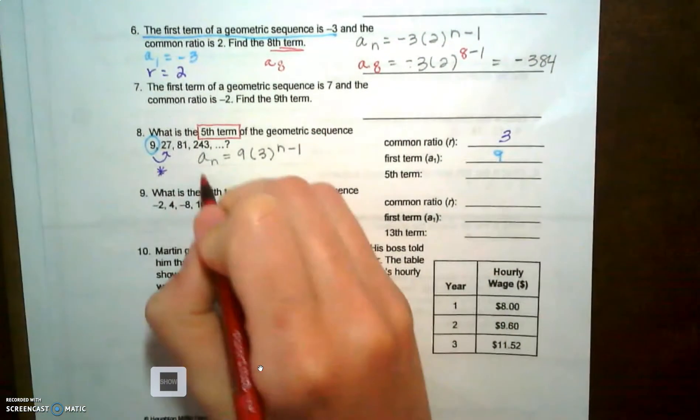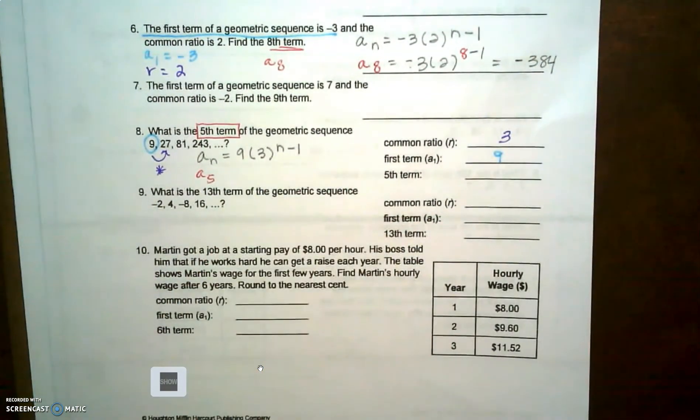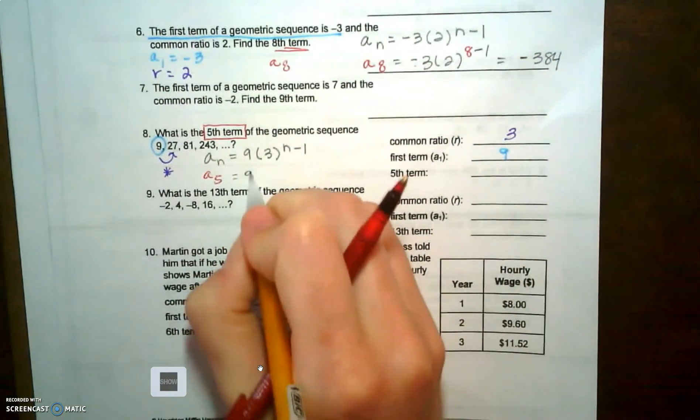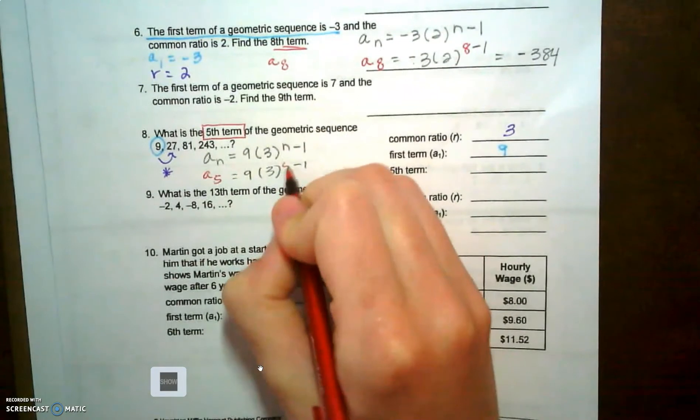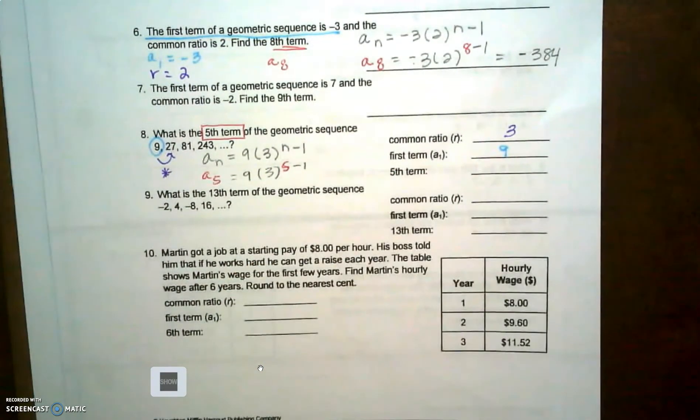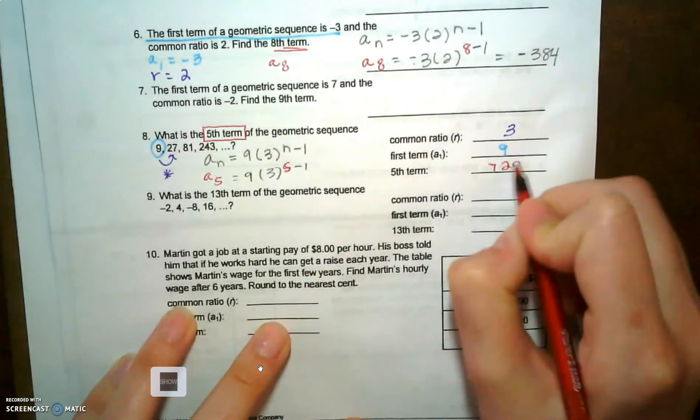So I'm going to substitute in a five for the n spot, so nine times three raised to the five minus one power. So I get seven hundred and twenty nine when I put that into my calculator.